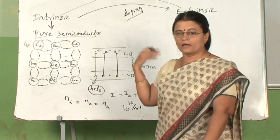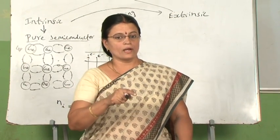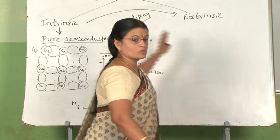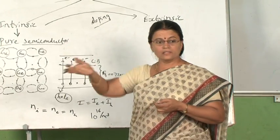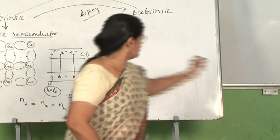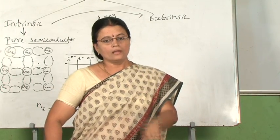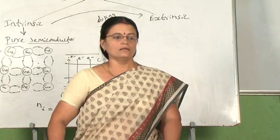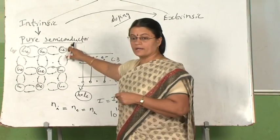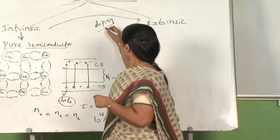Our aim is to enhance the conductivity, but that must be done in a controlled manner. We cannot simply increase the dopants or impurity atoms to raise the conductivity indefinitely. Doping is therefore the process of deliberate addition of desired impurity atoms to modify the properties of a pure semiconductor in a controlled manner.